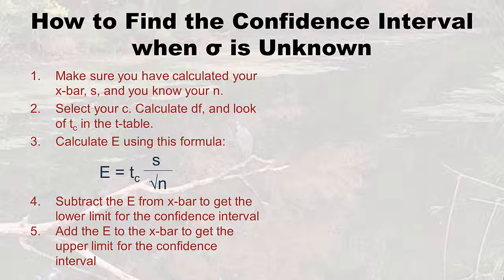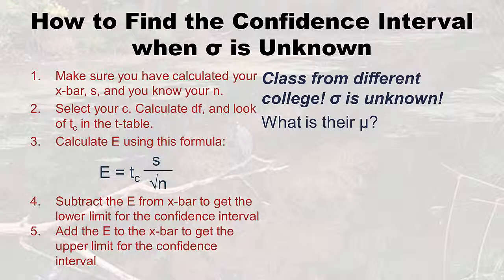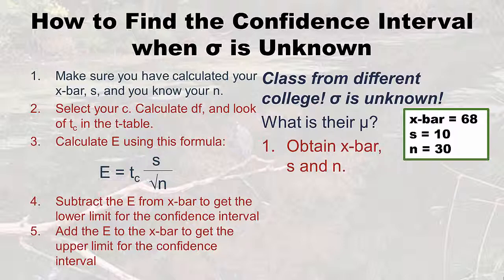Let me demonstrate this with an example. We're in a different college where the population standard deviation is unknown. We want to know their mu and we're going to do our best. First, let's obtain x-bar, calculate s, and count up n. I'm pretending that at this new college they did their test and got x-bar of 68 — a little better than before. The sample standard deviation was 10, and we studied 30 people, so n equals 30. That's step one: we've pulled together our x-bar, our s, and our n.